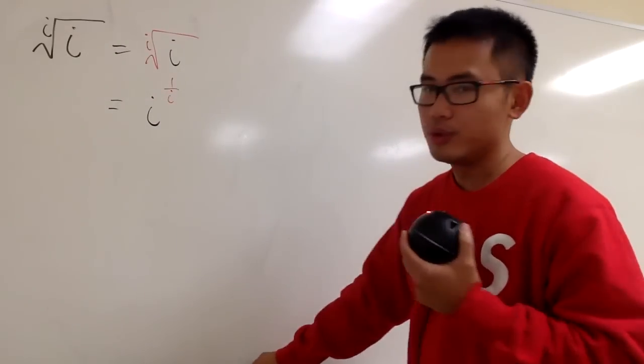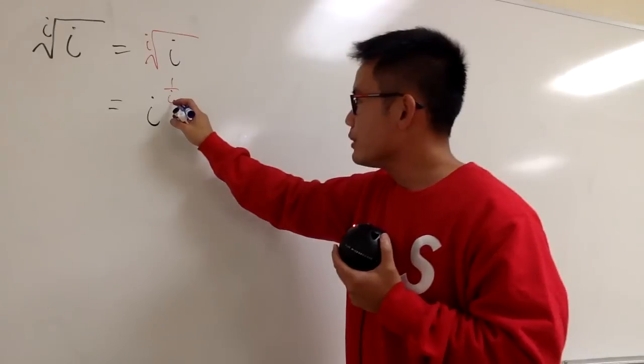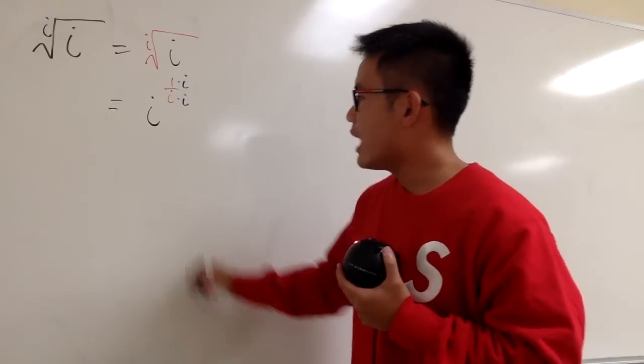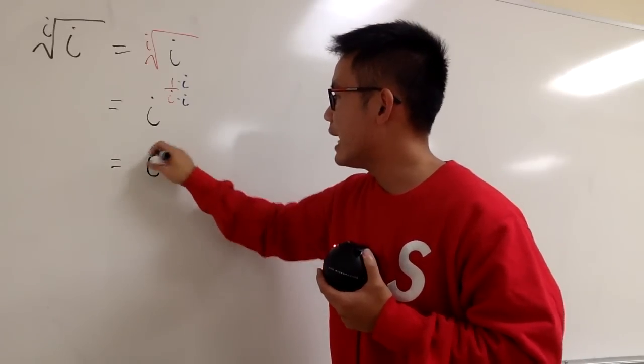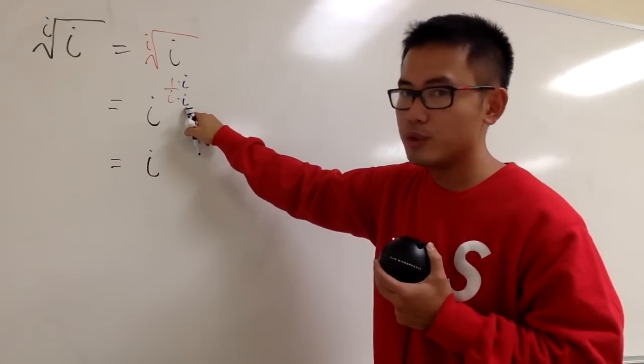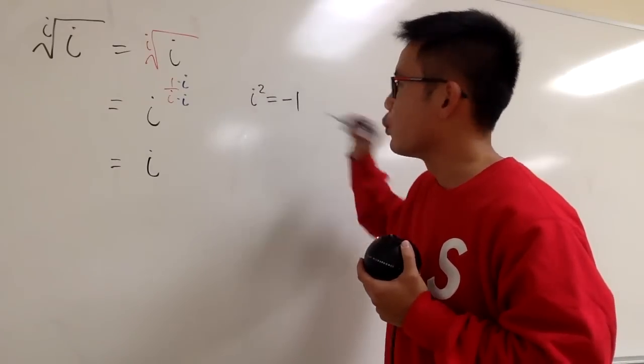And now what? Well, do the usual business. I don't like i to be on the bottom, I like to be on the top, so we can multiply the top and bottom by i. And now, we will see we still have the i as the base. Here we have i times i, which is what? i squared, and you know that's negative 1.